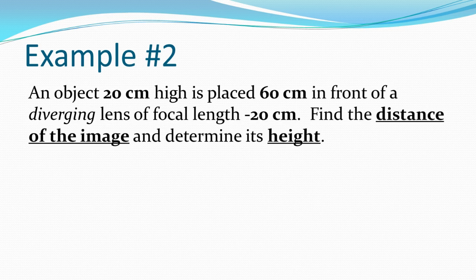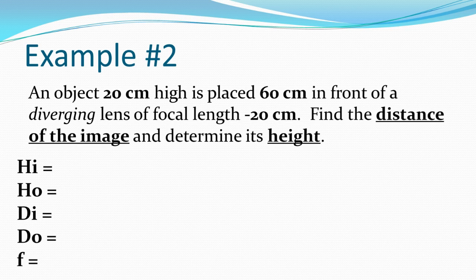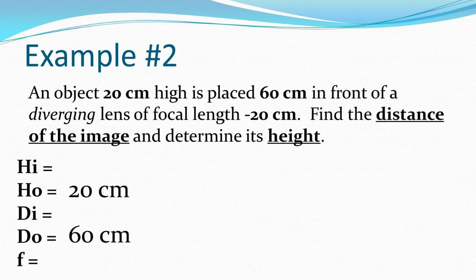This next example: an object that is 20 centimeters high is placed 60 centimeters in front of a diverging lens with a focal length of negative 20 centimeters. Remember, diverging lenses always have negative focal lengths — they won't always give you the negative sign explicitly, so keep in mind: diverging means negative. Find the distance of the image and determine its height. Start by listing your variables: hi, ho, di, do, and f. ho = 20 cm, do = 60 cm, f = −20 cm.